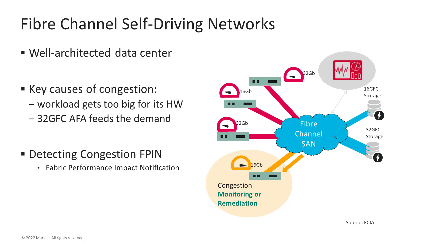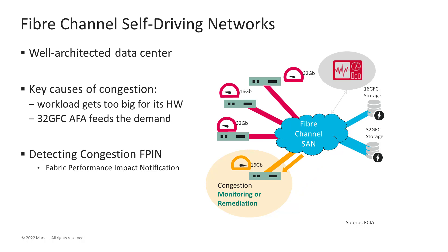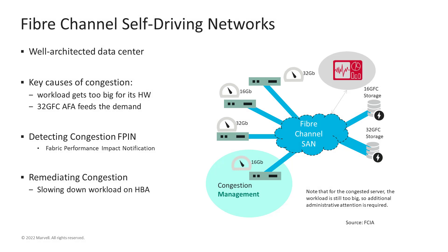To address these congestion issues, the Fiber Channel Industry Association implemented the use of Fiber Channel Impact Notification, or FPIN, to allow devices connected within the SAN to communicate about congestion-related issues. The congested server HPA gets messages from the fiber channel switch that it is causing congestion. Other HPAs also receive FPIN messages so they can take action, including IO leveling to reduce the impact on overall SAN data flow, allowing other devices to return to normal operation.